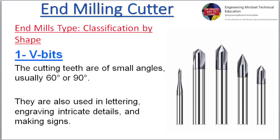Classification by shape. 1. V-bits: The cutting teeth are of small angles, usually 60 degrees or 90 degrees. They are also used in lettering, engraving intricate details, and making signs.